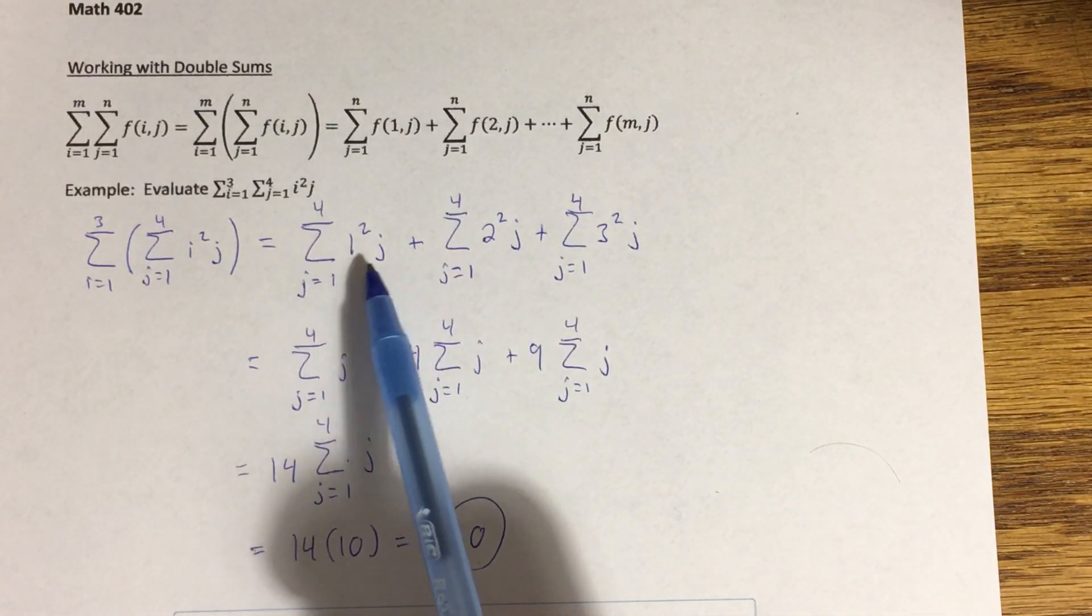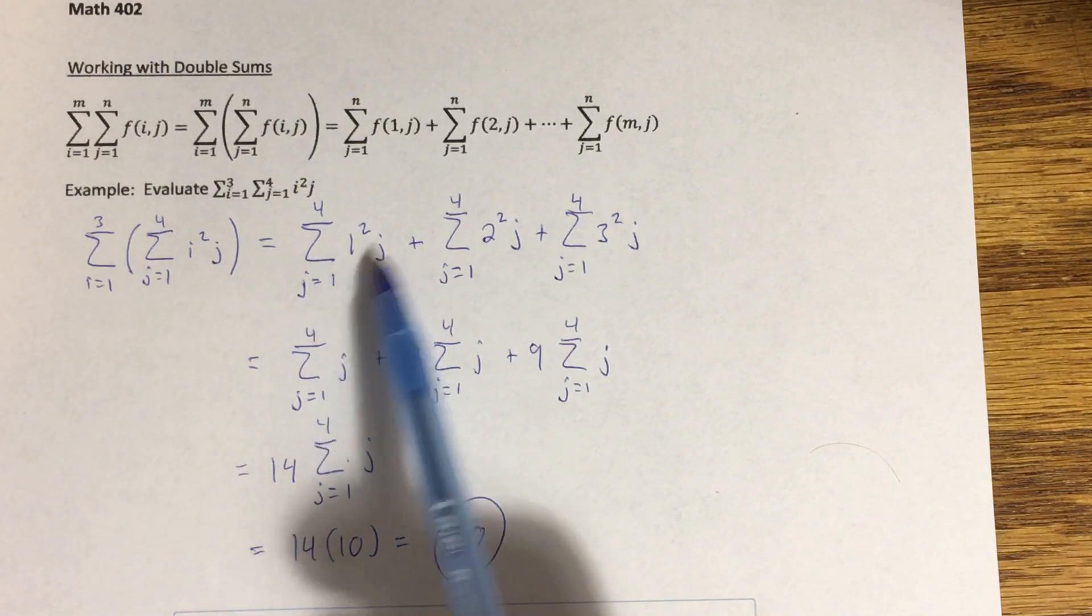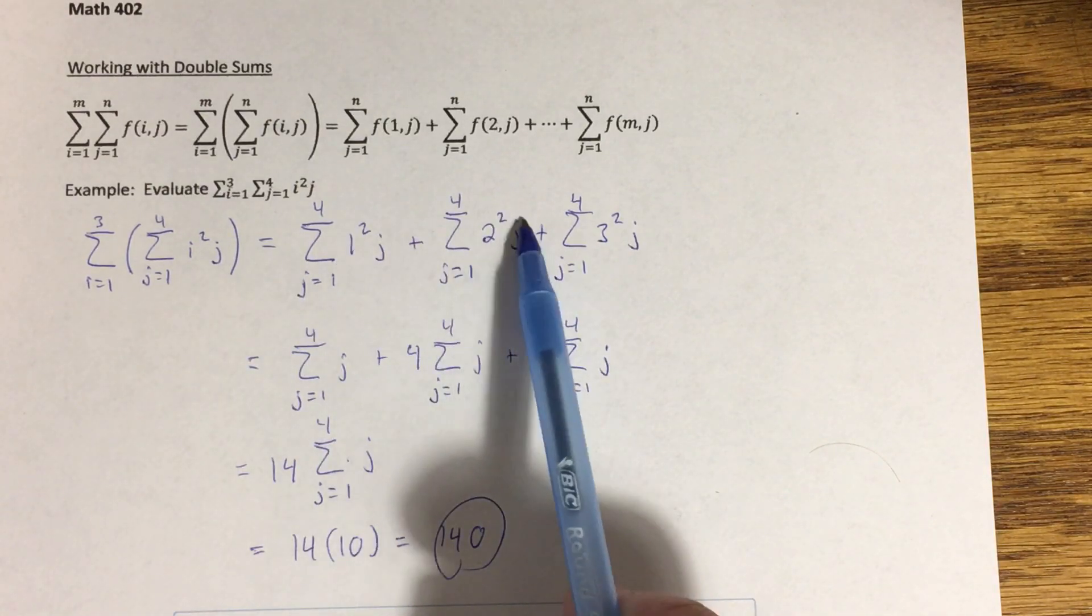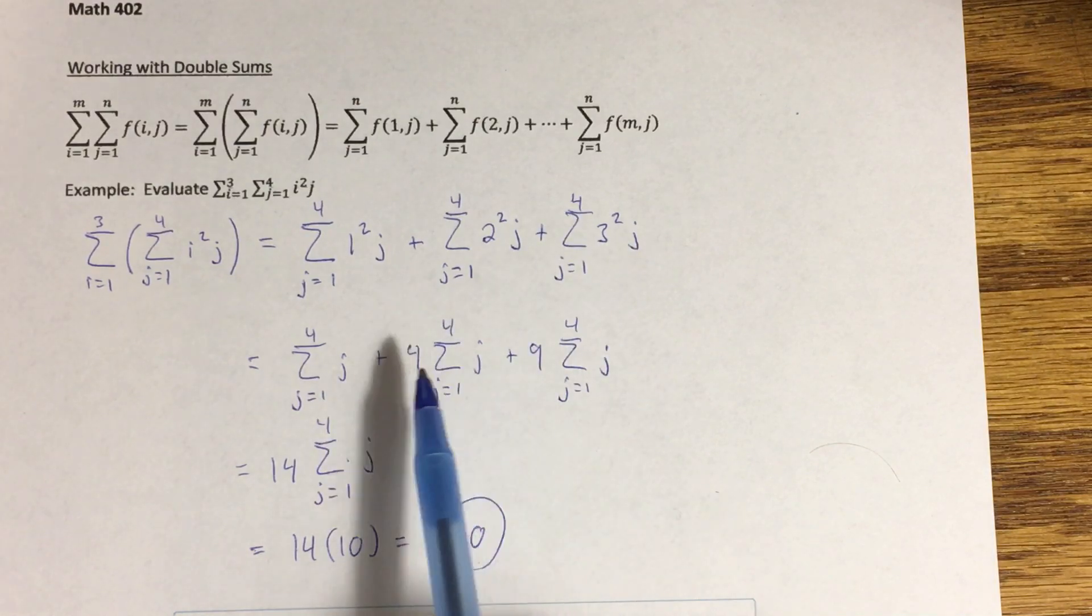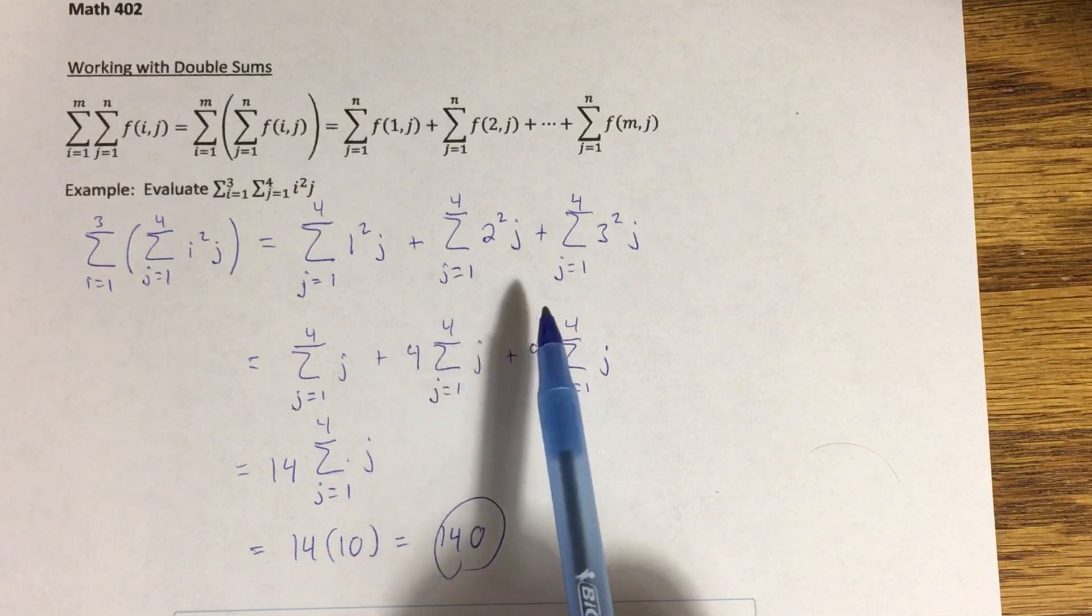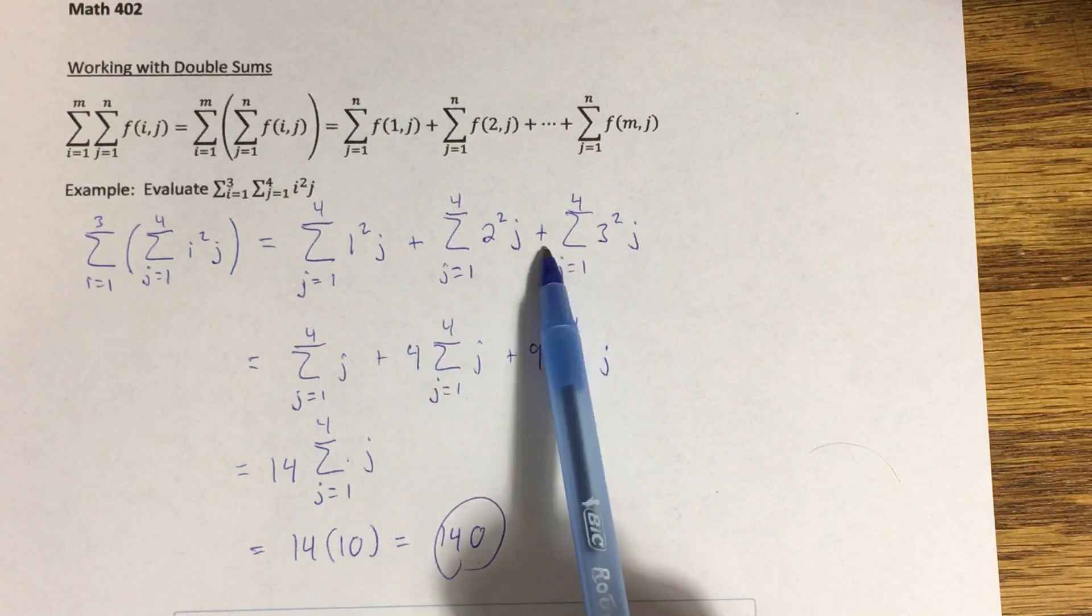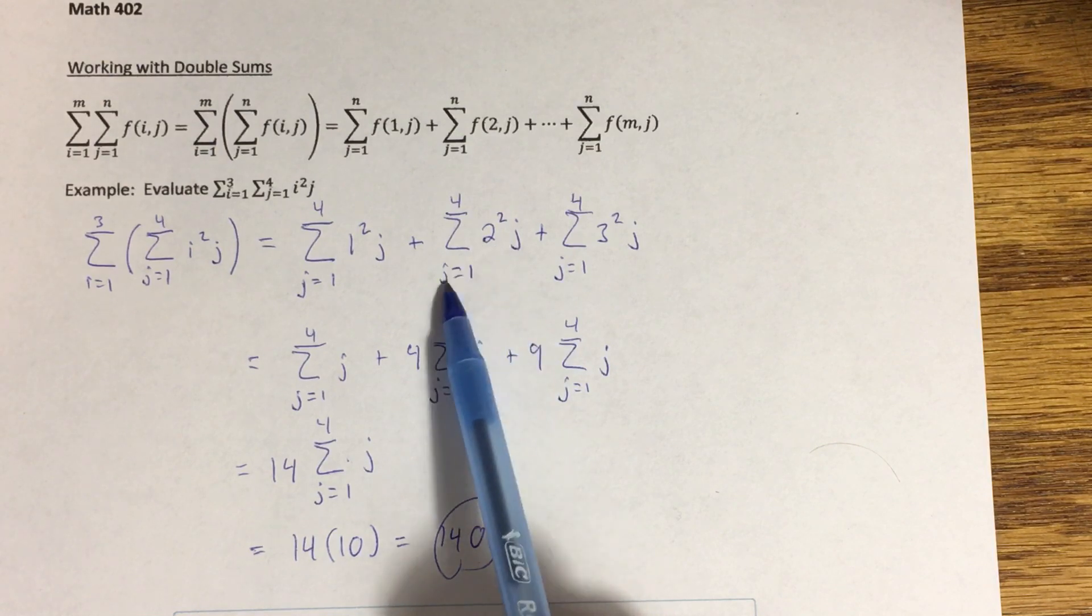These summations look nearly identical. The only difference is what happened to the i in each one: we have one squared, a two squared, and three squared there. If you remember your properties of summations, as a consequence of the distributive property, you can factor things out as long as it's a constant, something that's not depending on that index j there.